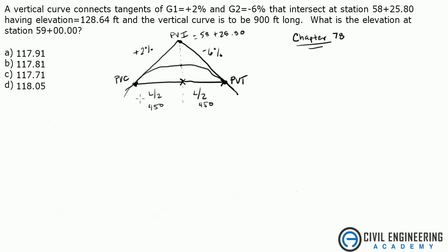So I drew this out already. This is a vertical curve. They're giving you the two grades - it's a positive 2% and then a negative 6%. The point of vertical intersection (PVI) has a station of 58+25.8. We know the total length is 900 feet, so that split in two is 450 on each side of this PVI. With a vertical curve, the distance is measured horizontally.